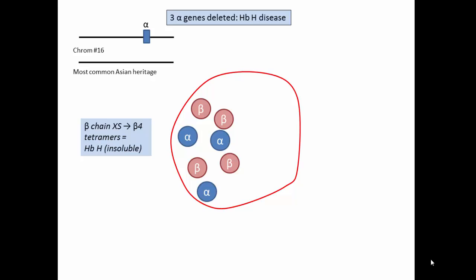This results in beta chain excess and the formation of beta-4 tetramers, a poorly soluble hemoglobin called hemoglobin H that is less toxic than the alpha globin aggregates seen in beta thalassemia, so there is little ineffective erythropoiesis.